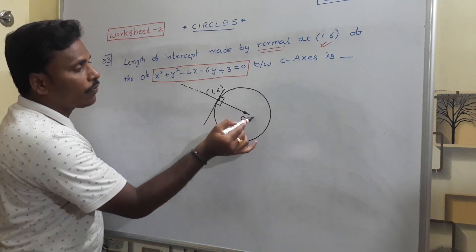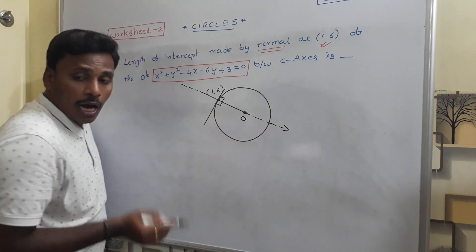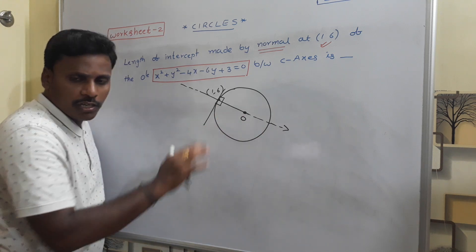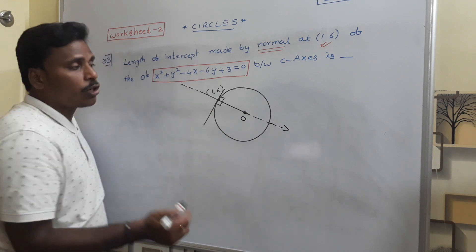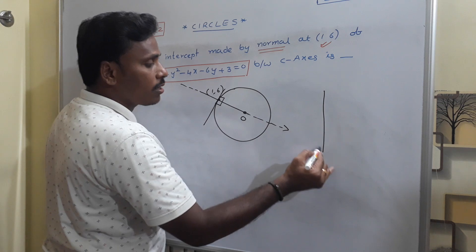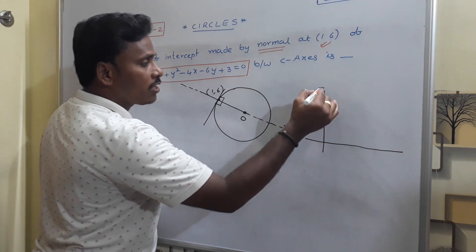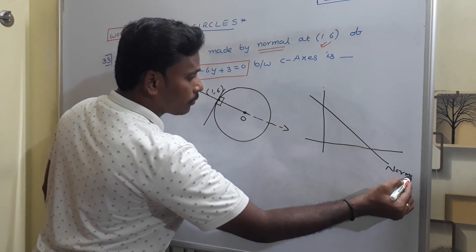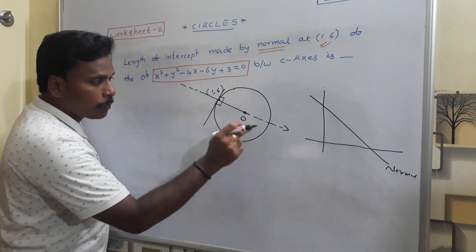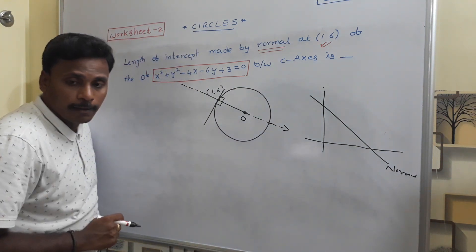The normal equation we'll find out first. The normal equation is in the coordinate system. The line with respect to x-axis and y-axis - if this is x-axis and this is y-axis, this line is normal.